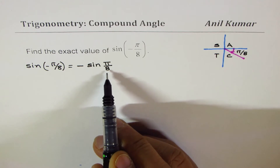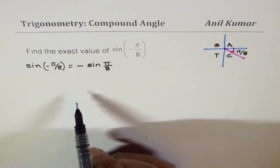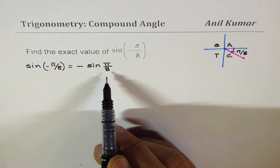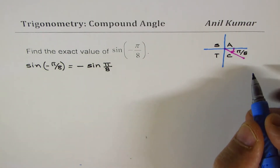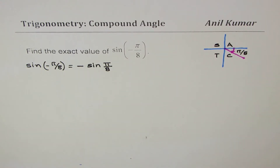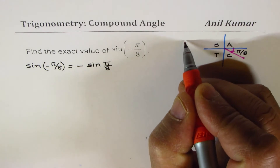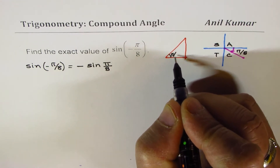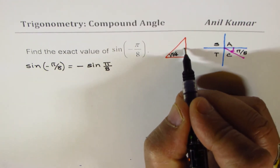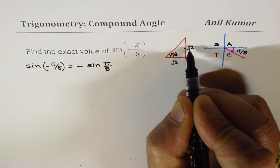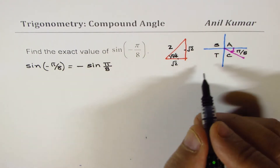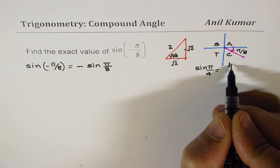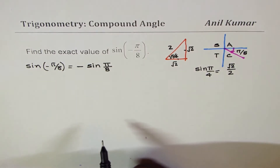Now we look for a relation: how is π/8 related to something we know? We know what π/4 is. Sine(π/4) — we have a special triangle. If I take this angle as π/4, then these two sides are equal; if they are equal to √2 then the hypotenuse is 2. So we know that sine(π/4) = √2 over 2.